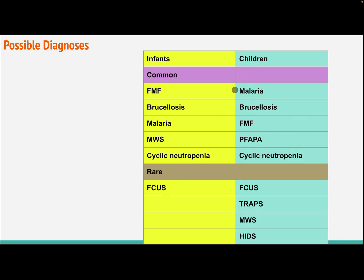In children, common causes include malaria, brucellosis, familial Mediterranean fever, and periodic fever with aphthous stomatitis, pharyngitis, and cervical adenitis, and cyclic neutropenia. Rare causes include familial cold urticaria syndrome, tumor necrosis factor receptor-associated periodic syndrome (TRAPS), Muckle-Wells syndrome, and hyperimmunoglobulinemia D syndrome.